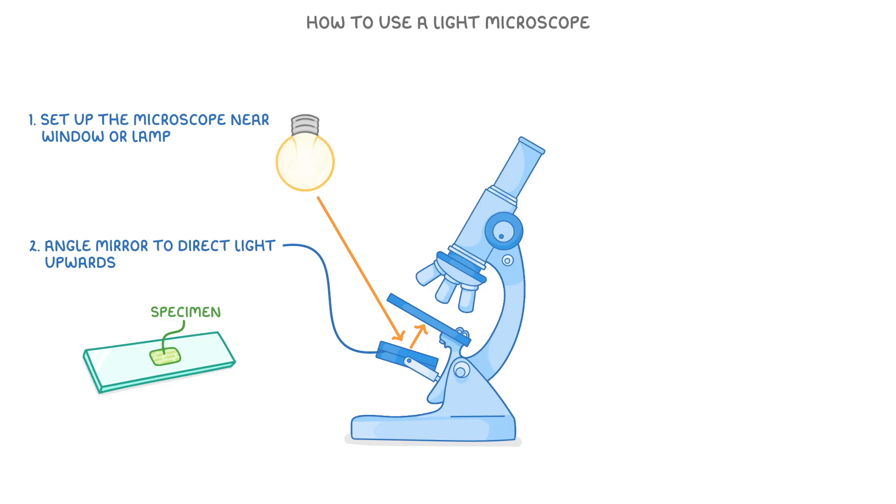And place it on a thin glass plate called a slide. Next we take our slide with the specimen on, place it onto the stage and secure it. This means we put it just here so the light reflected shines through the specimen and up through the microscope.